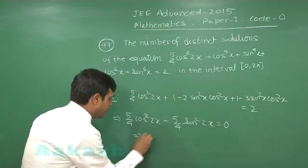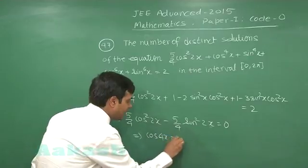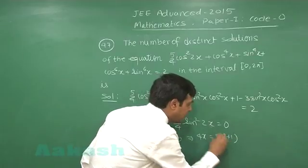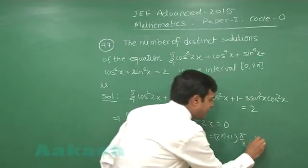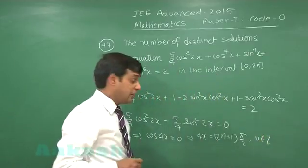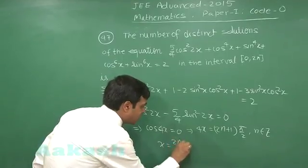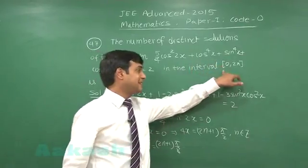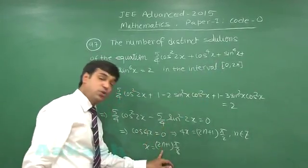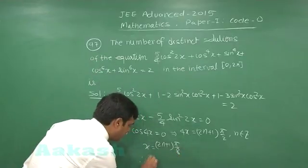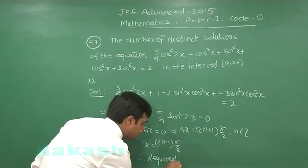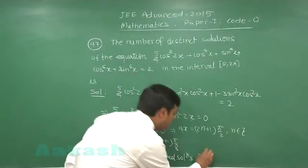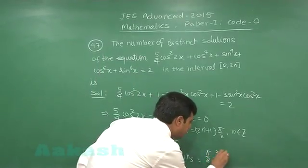Multiplying and dividing by 4, we can rewrite the expression as (5/4)cos²(2x) - (5/4)sin²(2x) = 0, which simplifies to cos(4x) = 0. The general solution is 4x = odd multiples of π/2, giving x = (2n+1)·π/8 where n is any integer. Substituting values of n starting from 0, we get x = π/8, 3π/8, 5π/8...